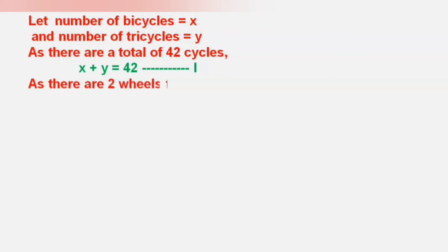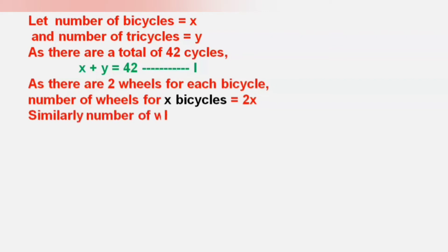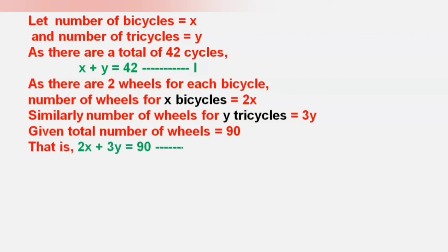As there are 2 wheels for each bicycle, the number of wheels for x bicycles will be 2x. Similarly, the number of wheels for y tricycles will be 3y. Given the total number of wheels is 90, the number of wheels of bicycles and tricycles gives us 2x plus 3y equals 90. Let us take this as equation number 2.